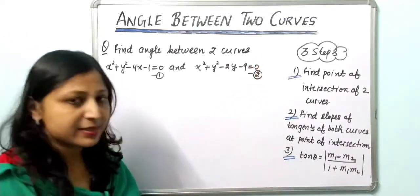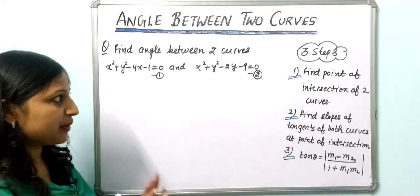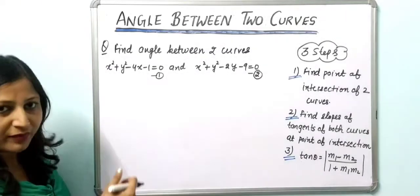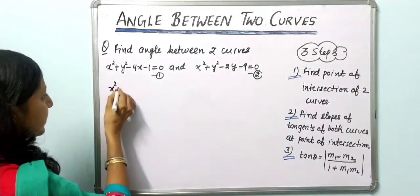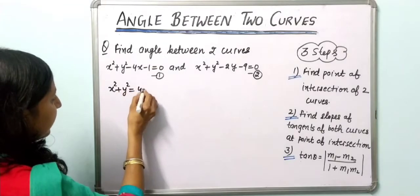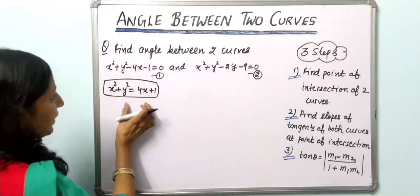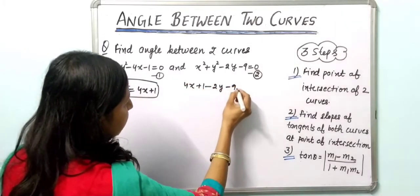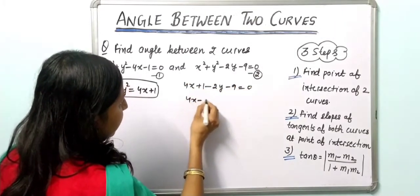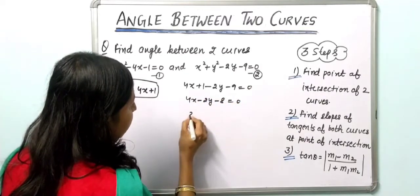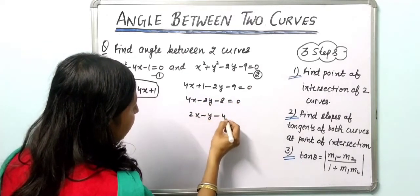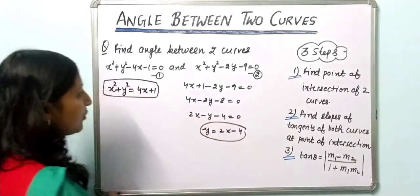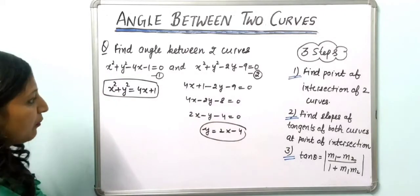Following step one, we find the point of intersection of the two curves. From the first equation, x² + y² = 4x + 1. Substituting this into the second equation gives 4x + 1 − 2y − 9 = 0, which simplifies to 4x − 2y − 8 = 0, or 2x − y − 4 = 0. Therefore y = 2x − 4. Now we substitute this value of y into the first equation.